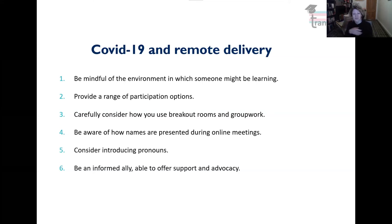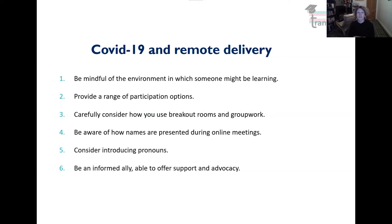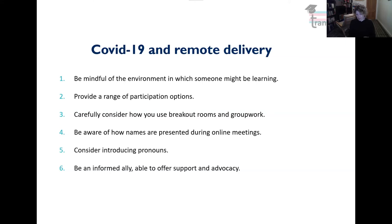The second suggestion is to provide a range of participation options. There might be a very good reason why someone doesn't put their camera on. For this group in particular, there may be issues of concern about gender presentation — nobody loves staring at themselves endlessly during sessions, but this particular group might have really good reasons why they don't want to, or it might be that their gender presentation at that moment is different to how they usually appear within a classroom context, because they can't for some reason or it might not be safe. Think about whether you're allowing people to use chat functions or discussion boards rather than having to speak out or have their camera on.